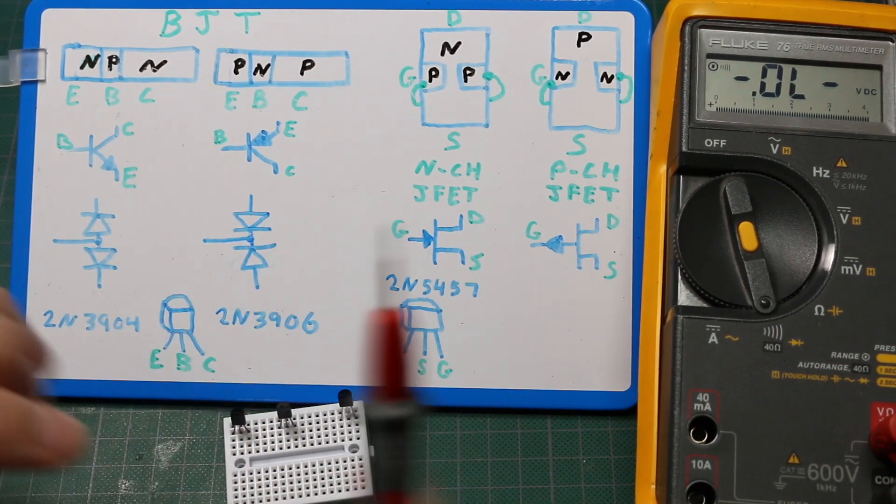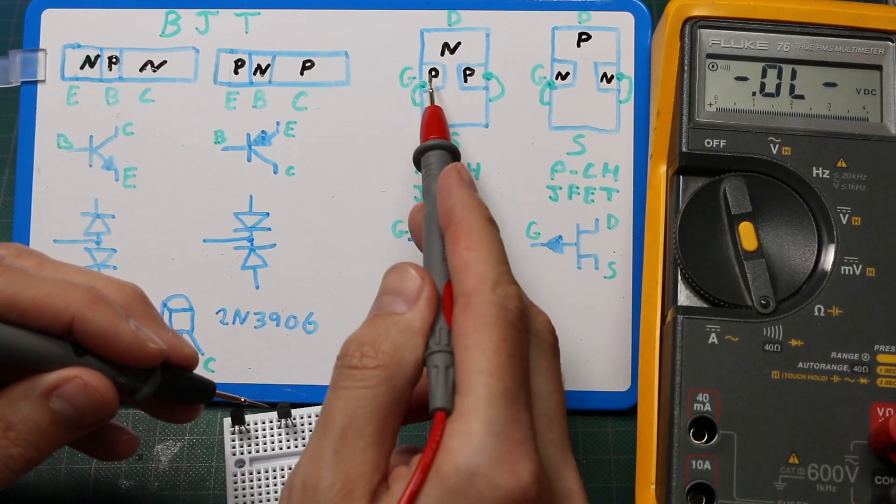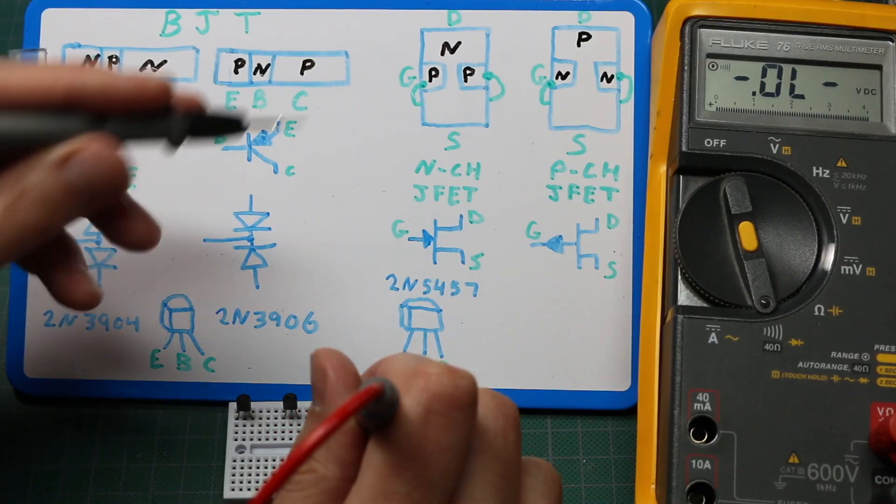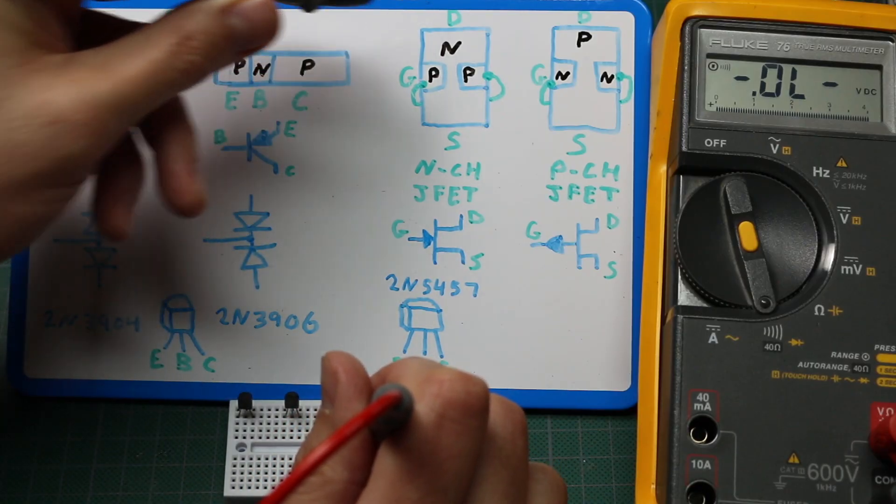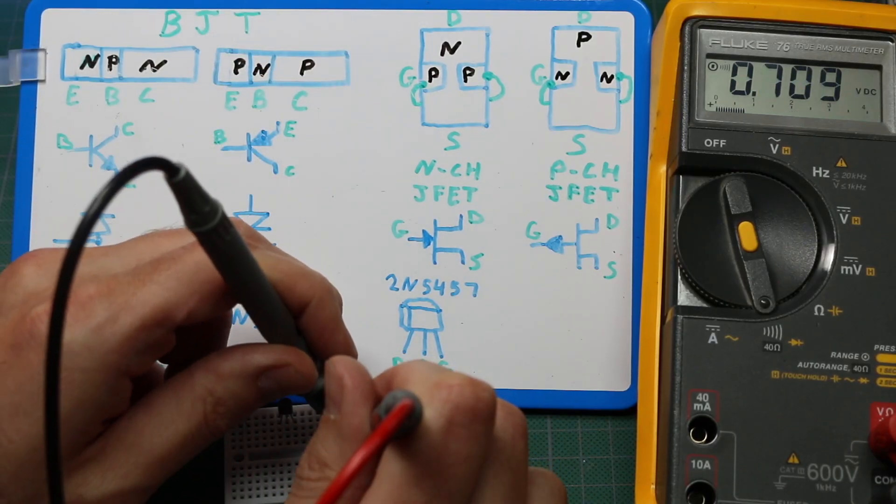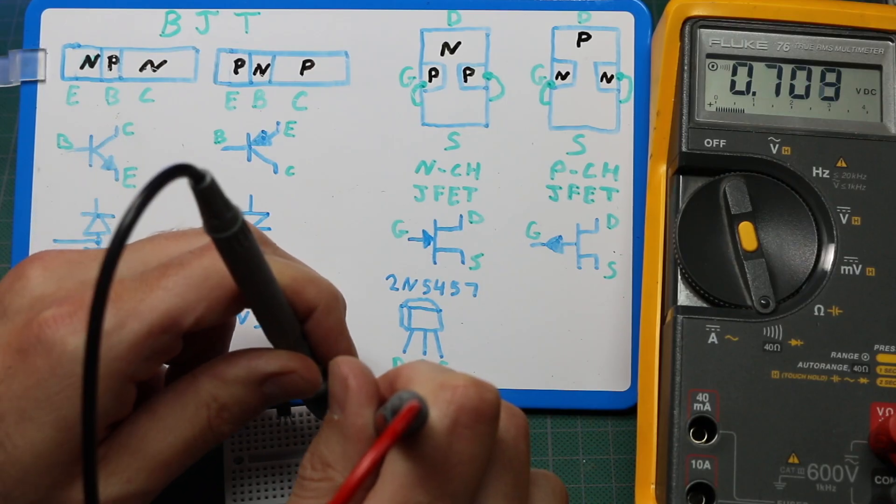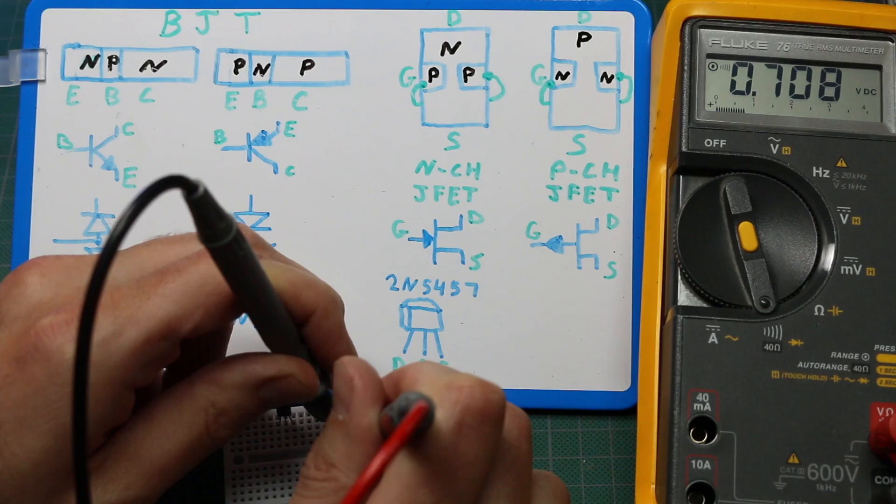Now if I forward bias, so I put the positive on the P-type gate and then the negative on the source and on the drain. There's a silicon diode drop and another silicon diode drop.